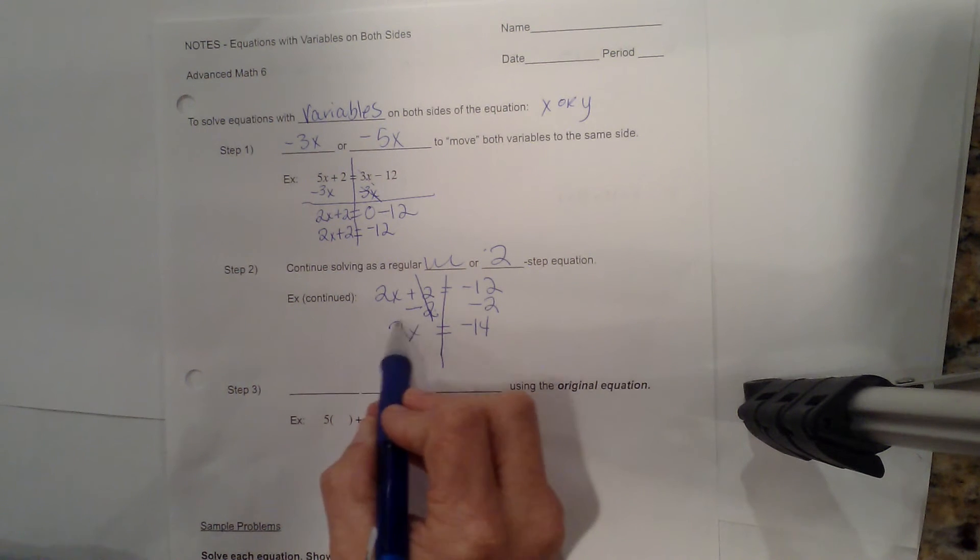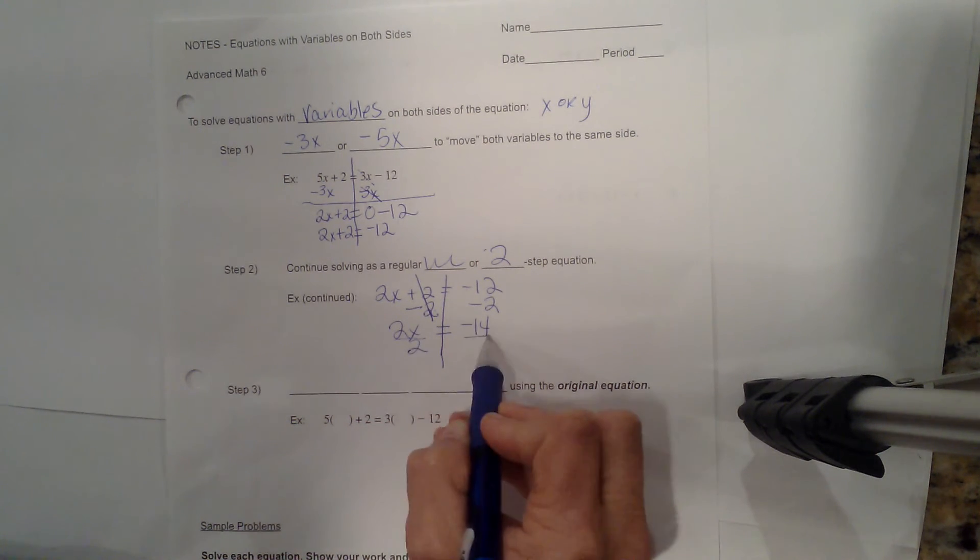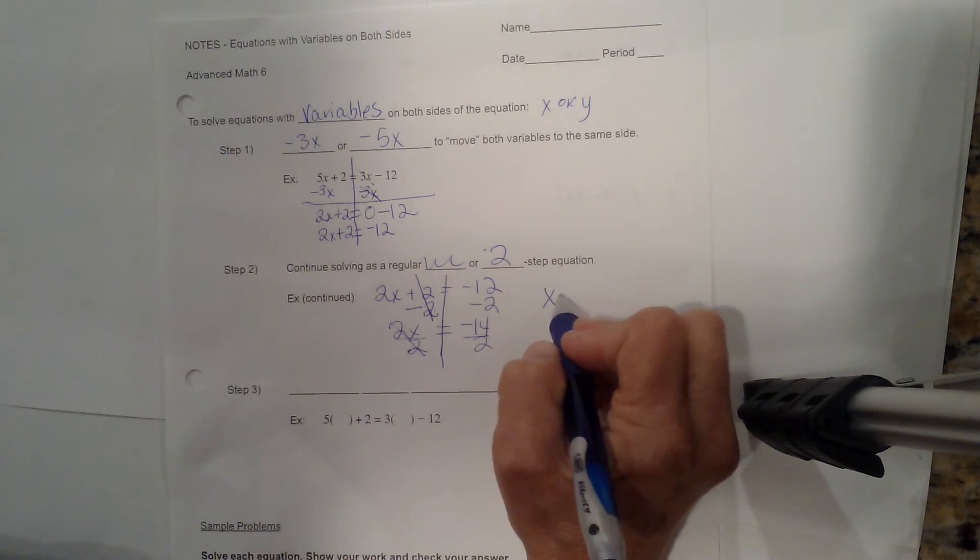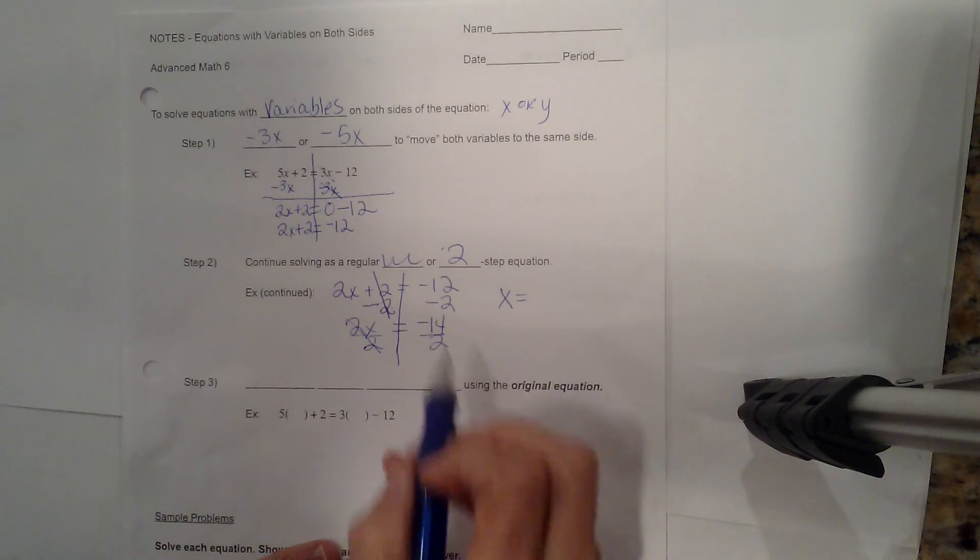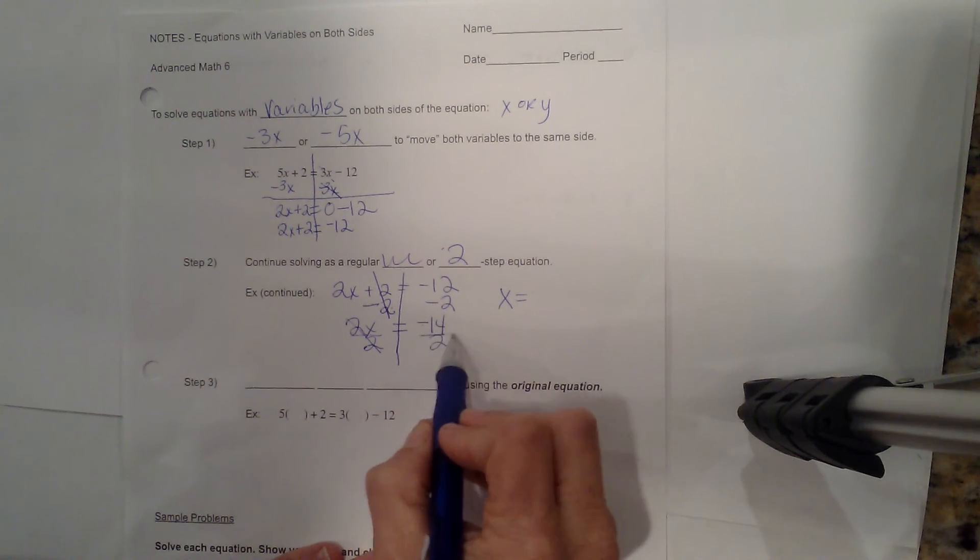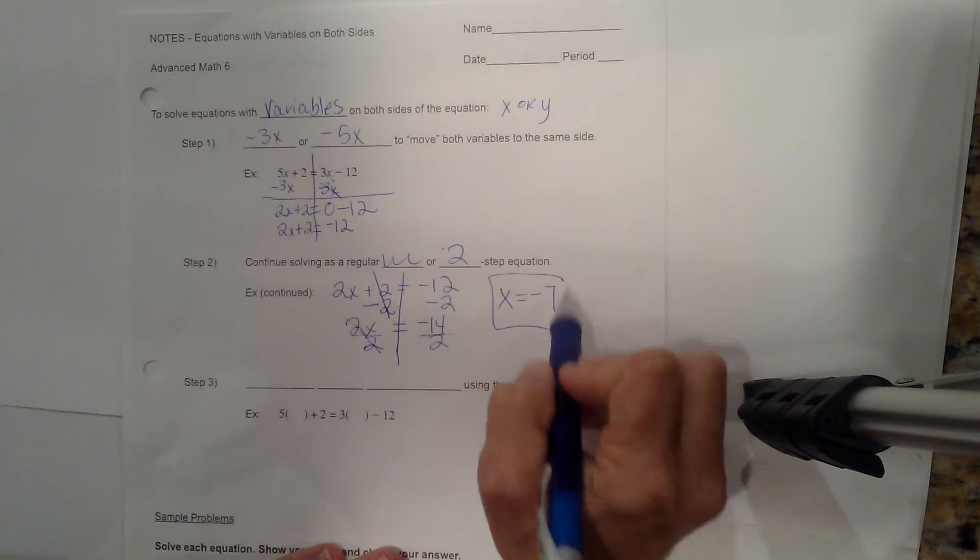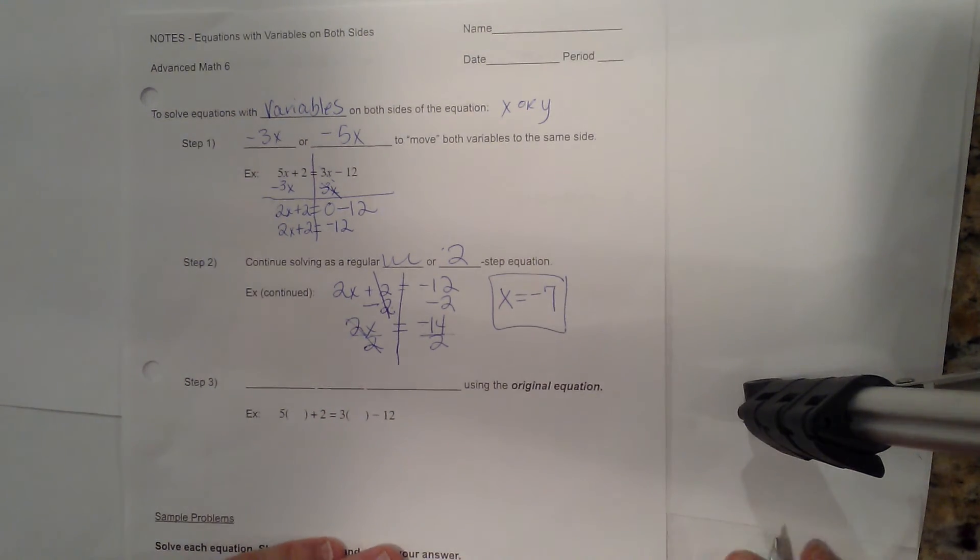This is 2 times x. So to undo a multiplication, I'm going to divide both sides by 2 and I'm left with x is equal to, and then negative 14 divided by 2 is negative 7. So there is my answer. My answer to this equation is negative 7.